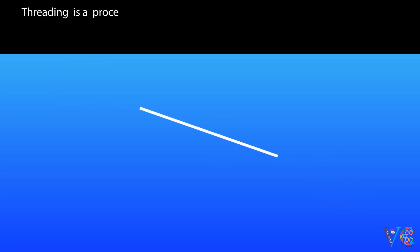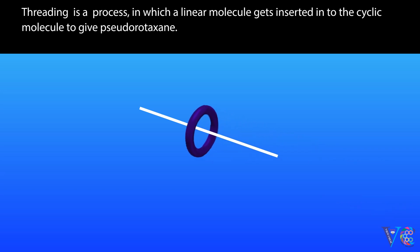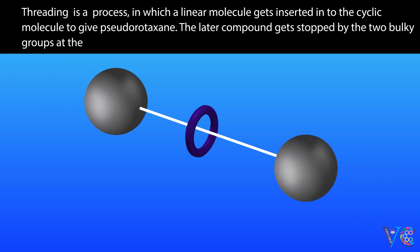Threading is a process in which a linear molecule gets inserted into the cyclic molecule to give pseudorotaxane. The later compound gets stopped by the two bulky groups at the two ends.